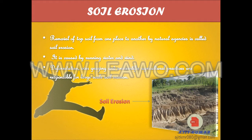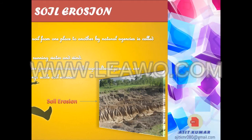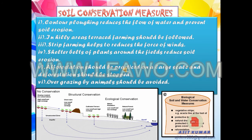Soil erosion: Removal of top soil from one place to another by natural agencies is called soil erosion. It is caused by running water and wind. Deforestation, overgrazing and unscientific agricultural practices are responsible for large-scale soil erosion. Contour plowing reduces the flow of water and prevents soil erosion. In hilly areas, terraced farming should be followed. Strip farming helps to reduce the force of winds. Shelter belts of plants around the fields reduce soil erosion. Afforestation should be practiced on a large scale and deforestation should be stopped. Overgrazing by animals should be avoided.